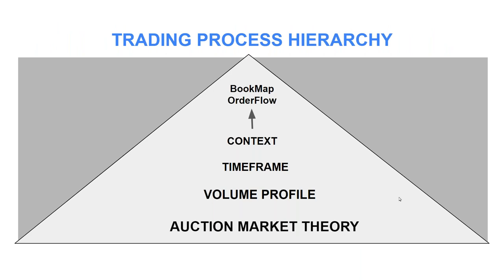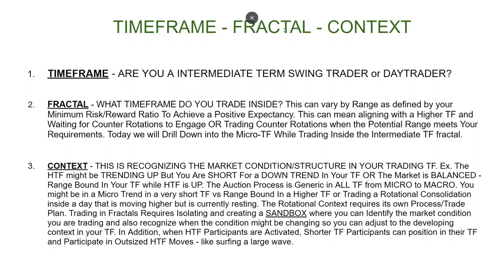Here's the process — I'm a process-oriented individual. Auction market theory: how does the market work? Volume profile: the optical representation of the auction. The time frame we operate in. What is the context of that time frame? And BookMap is the tip of the spear. What kind of trader are you — intermediate, swing, day trader? What fractal do you trade? Inside all these fractals you can have a trend. It's all the same — it's generic.